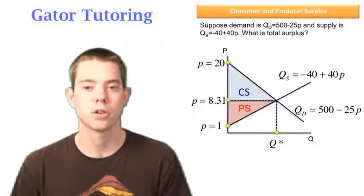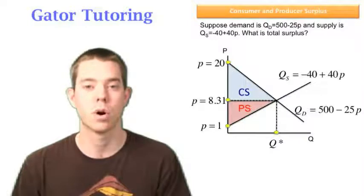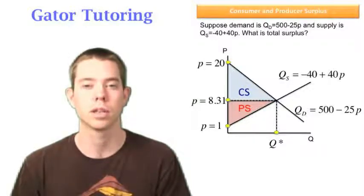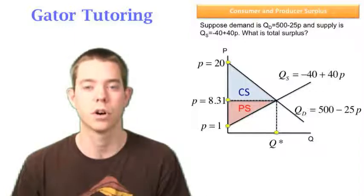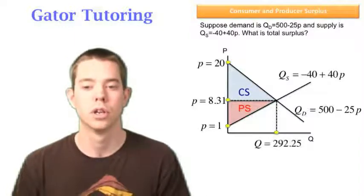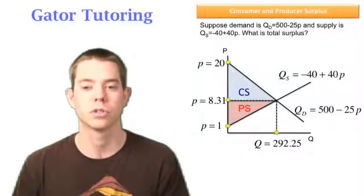Now that once you have that in your calculator, whatever price equals, you can plug it into either quantity supplied or quantity demanded to find Q star. I'm going to choose to plug it into my demand function in this case. And I find that Q star is equal to 292.25.